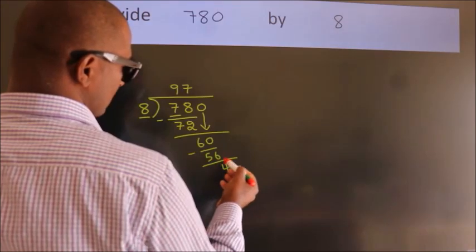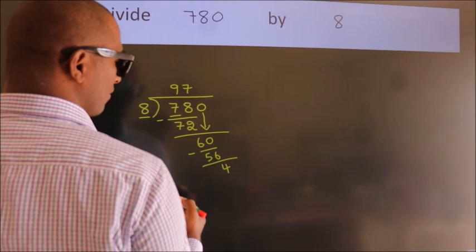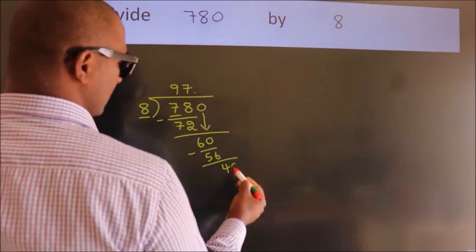After this, no more numbers to bring it down. So what we do is, we put dot, take 0.